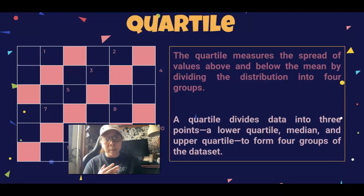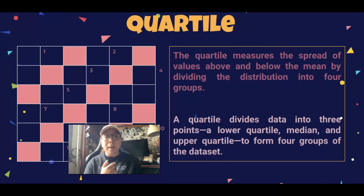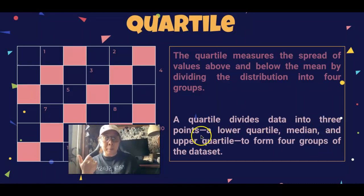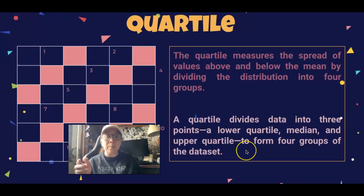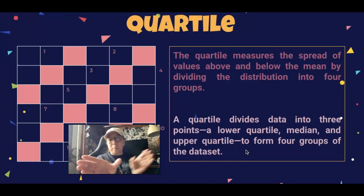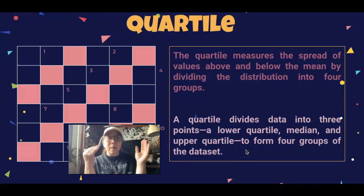Our lesson will start with: what is a quartile? A quartile measures the spread of values above and below the mean by dividing a distribution into groups. A quartile divides the data into three key points — the lower quartile, the median, and the upper quartile — essentially splitting the data into four sections of 25% each.